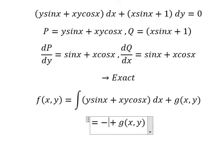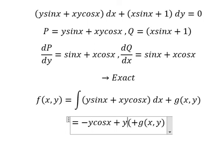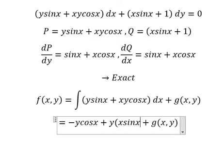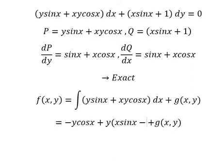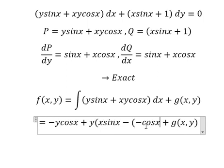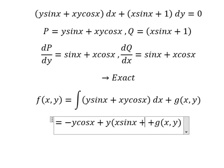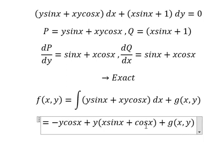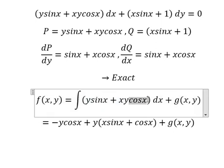The integration of sine X gives us negative cosine X. So we have positive and negative cosine X. I just use integration by parts for X cosine X.